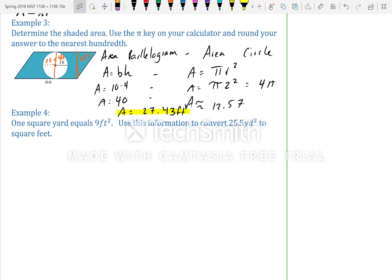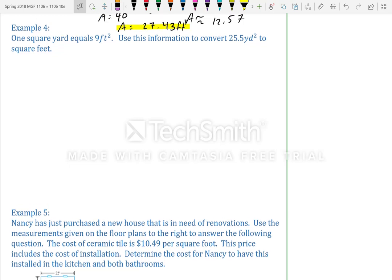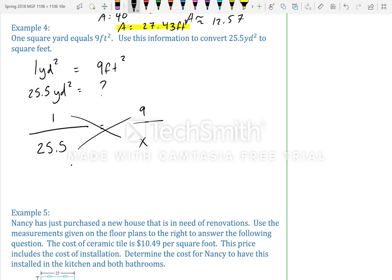Alright, the next question is just a simple conversion question. We're going to set it up as a proportion. So, 1 square yard equals 9 feet squared. Use this information to convert 25.5 yards to square feet. So, it tells us that 1 square yard is 9 feet squared. Now, we want to know 25.5 square yards. What does that equal? So, we have 1 over 25.5 equals 9 over x. We cross multiply to get x equals 229.5 feet squared.